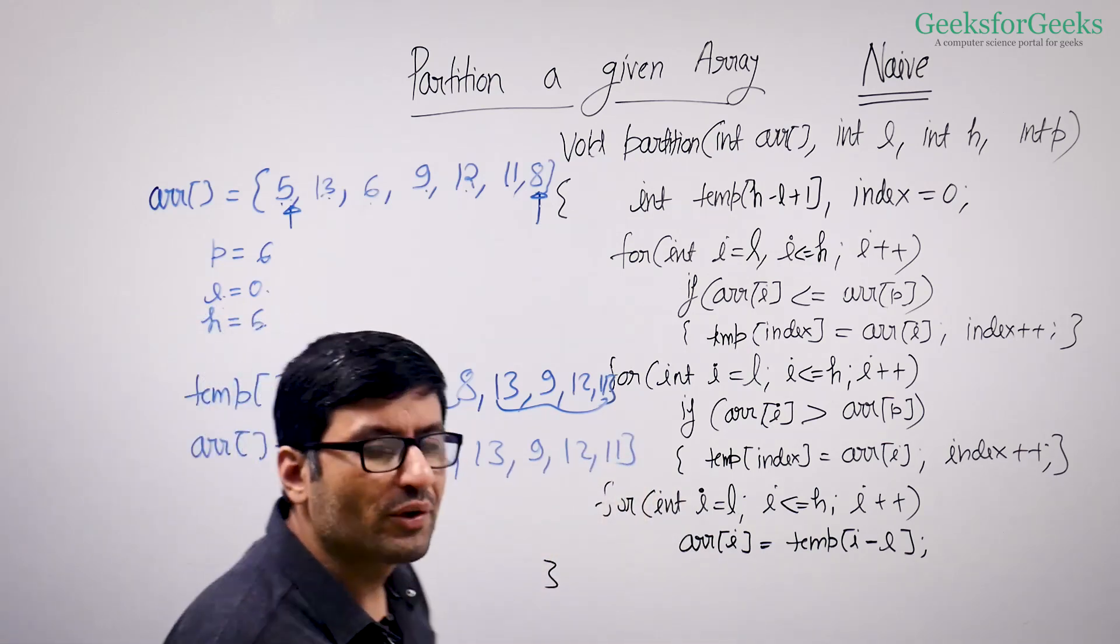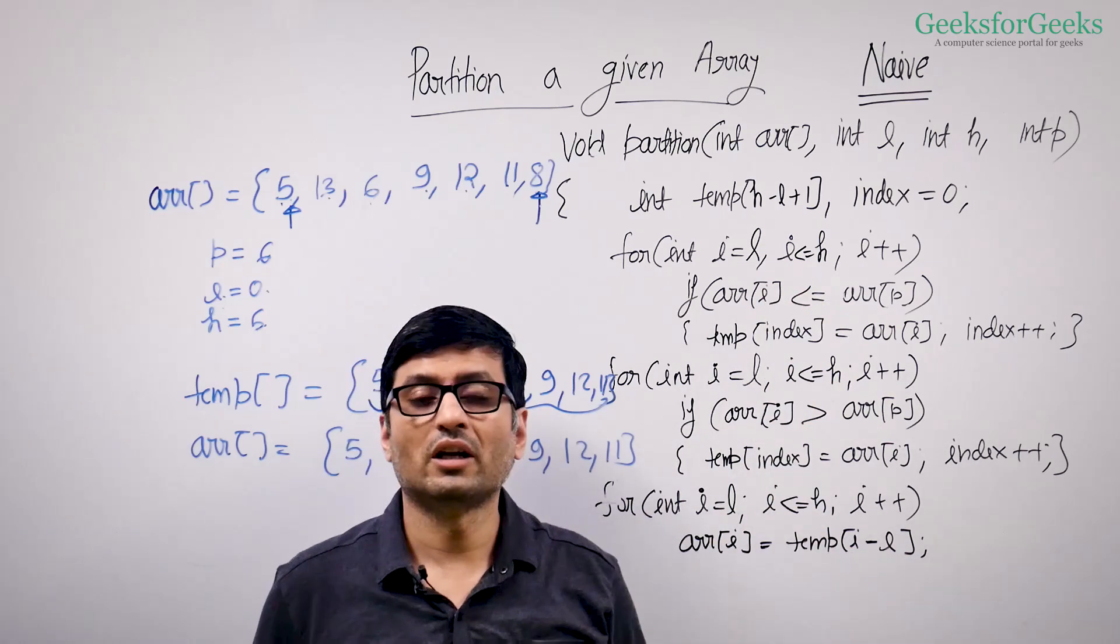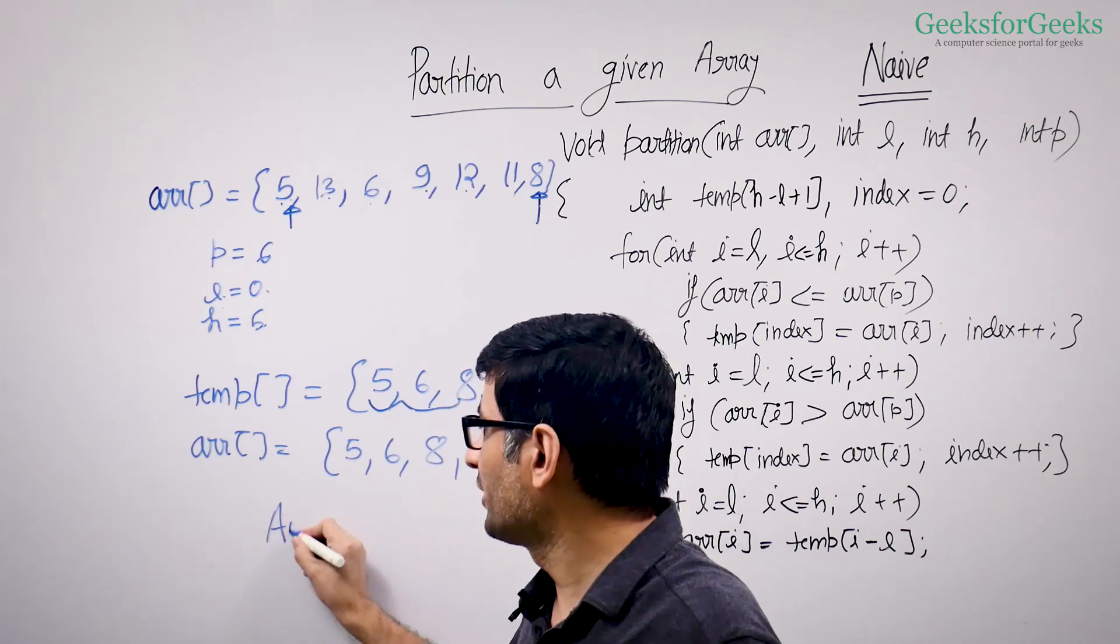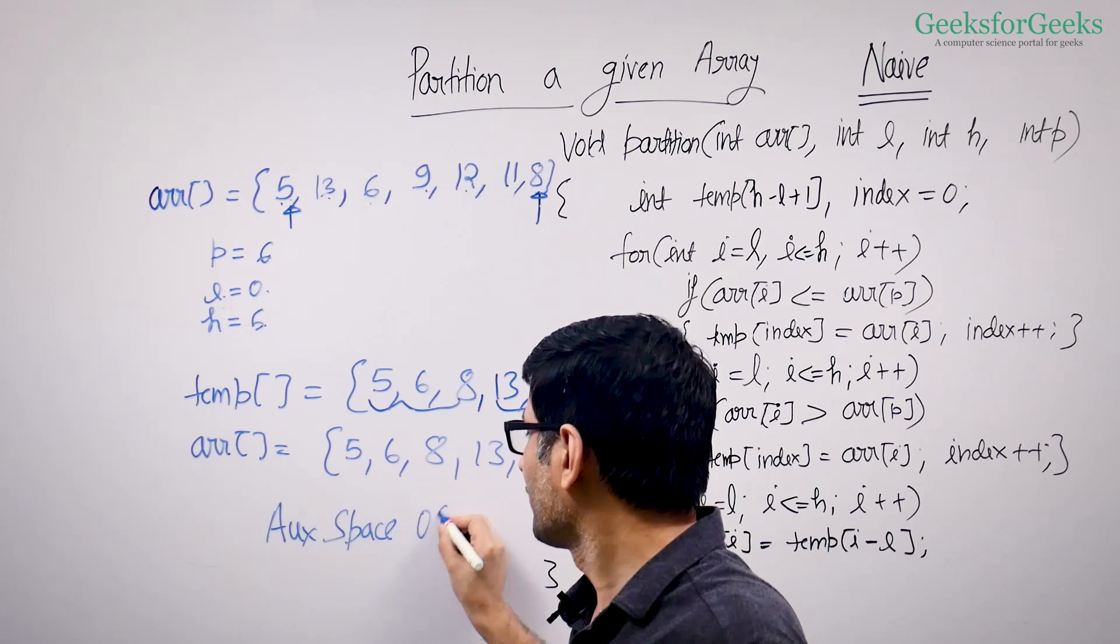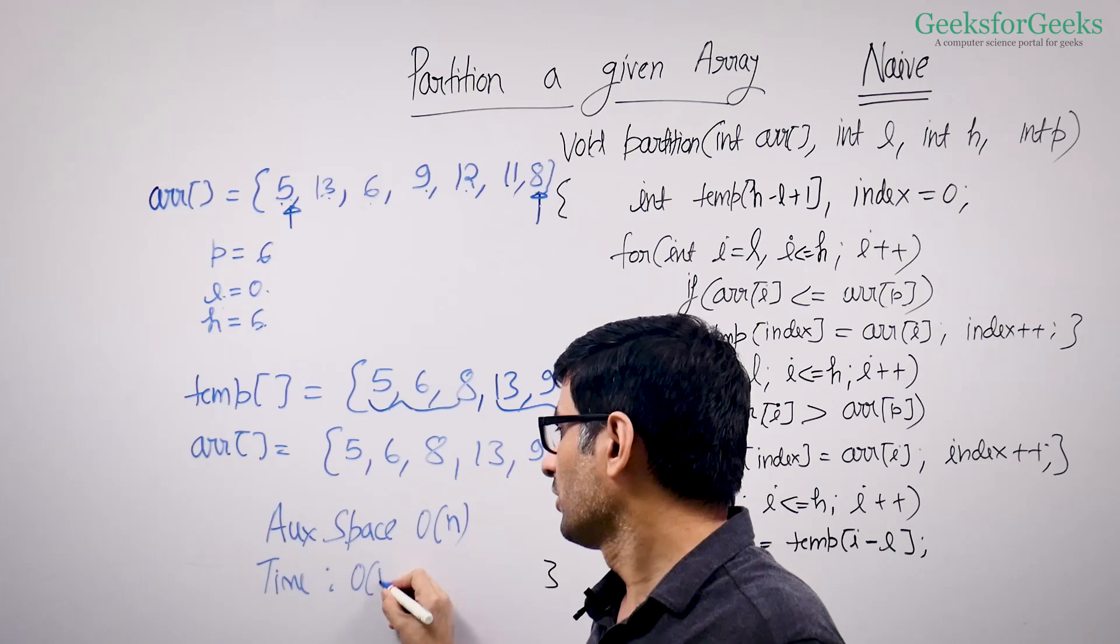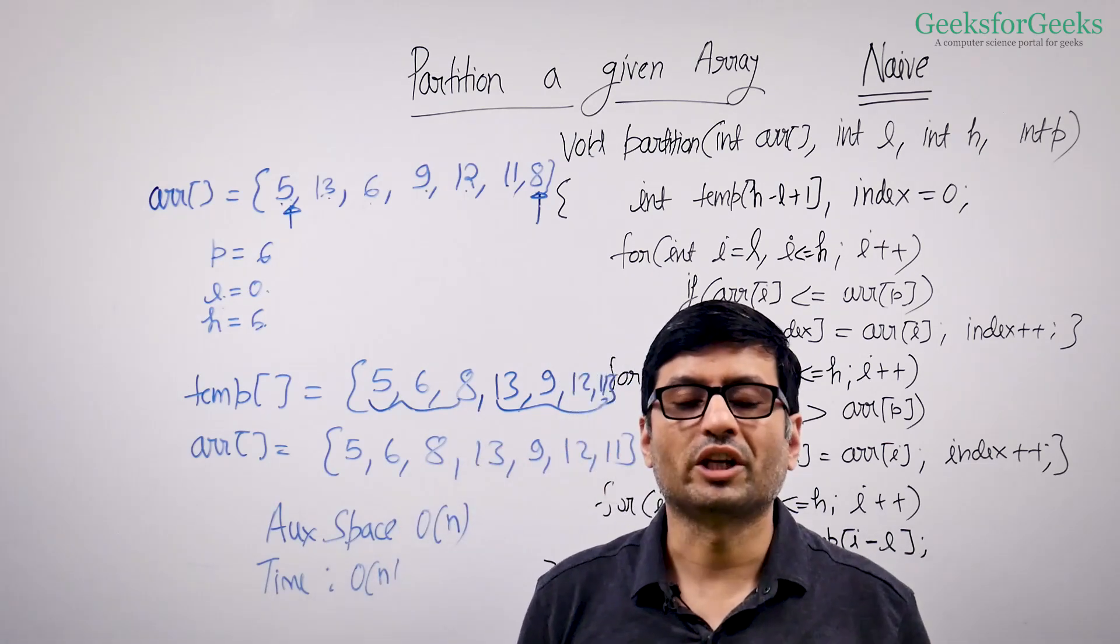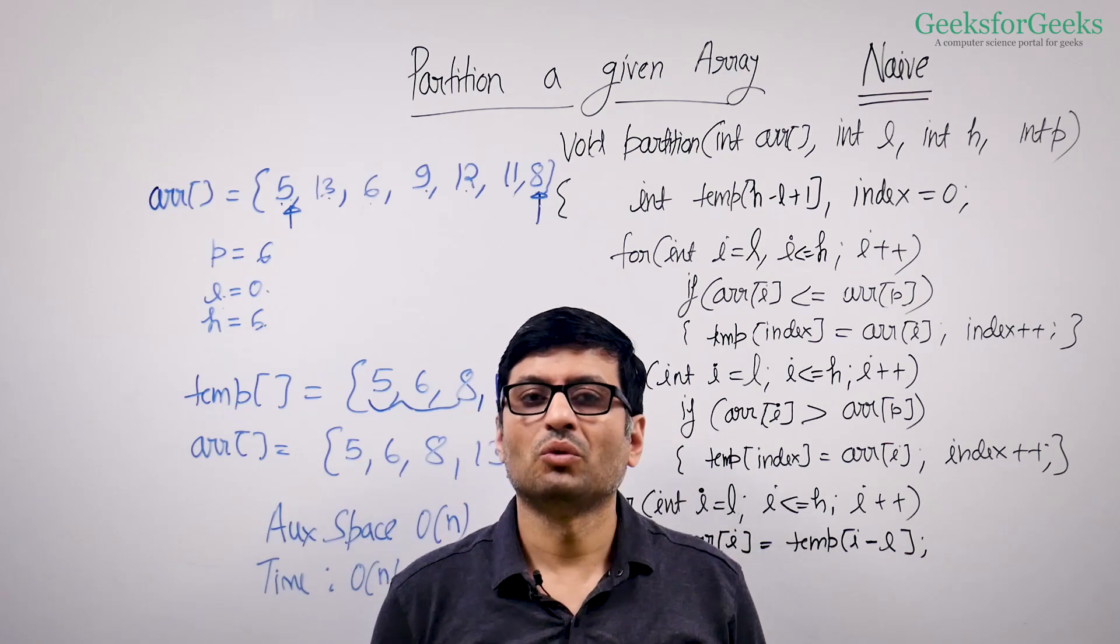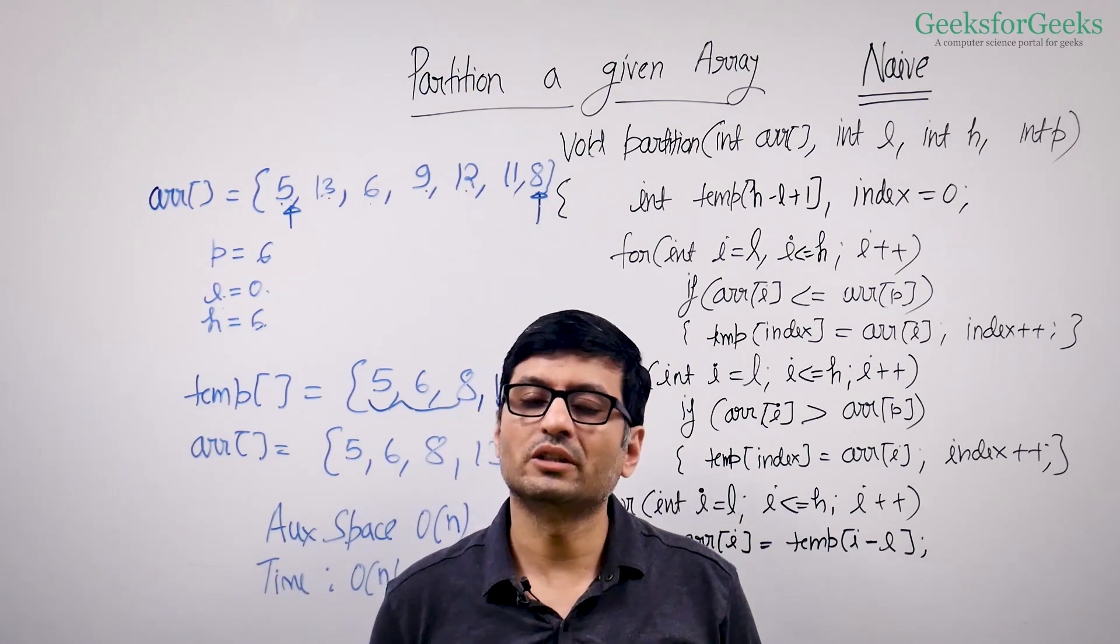So this is a naive way of partitioning. It requires three traversals and also requires big O of n extra space. So auxiliary space requirement by this is big O of n and time is big O of n, but it is like doing three traversals of our input array. So can you solve this problem with big O of 1 extra space? We will talk about that solution, Lomuto partition solution, in the next video.